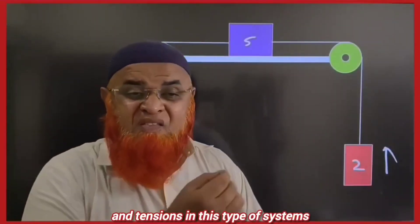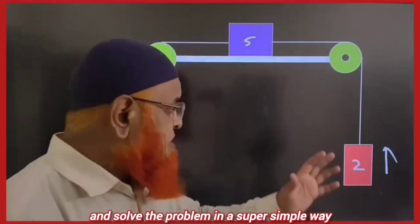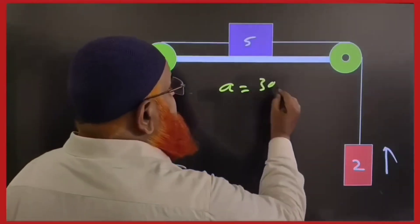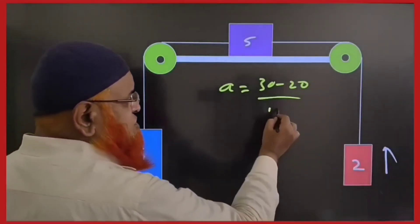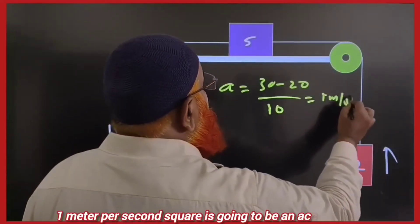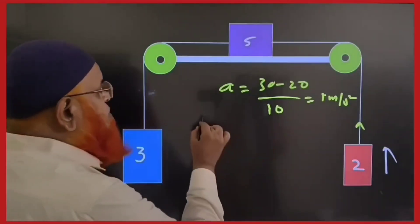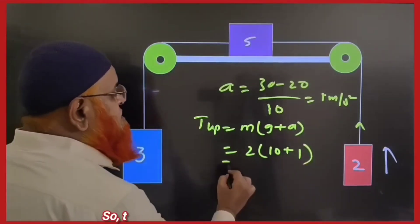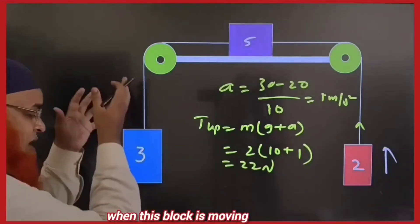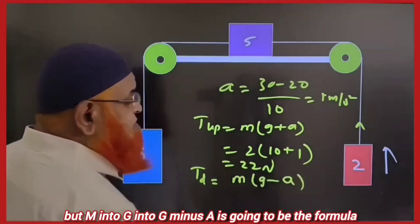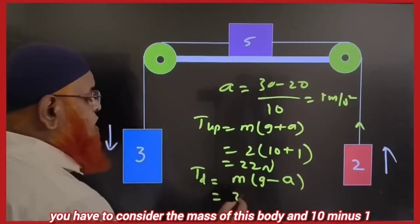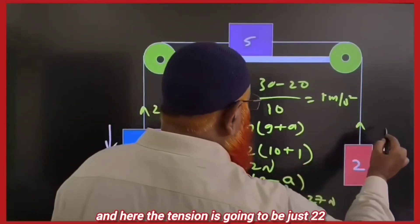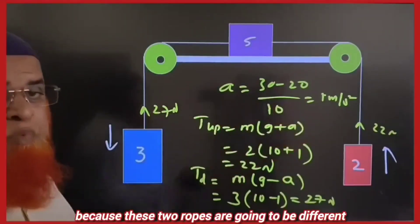How can you find acceleration and tensions in these systems while avoiding free body diagrams? Acceleration equals the difference in forces divided by total mass. 3 into g is 30, 2 into g is 20; total mass is 10. Acceleration is 1 meter per second squared. When a body moves up, tension is M into G plus A: 2 into (10 plus 1) equals 22 N. When moving down, tension is M into G minus A: 3 into (10 minus 1) equals 27 N. These two tensions are different because the two ropes are different.